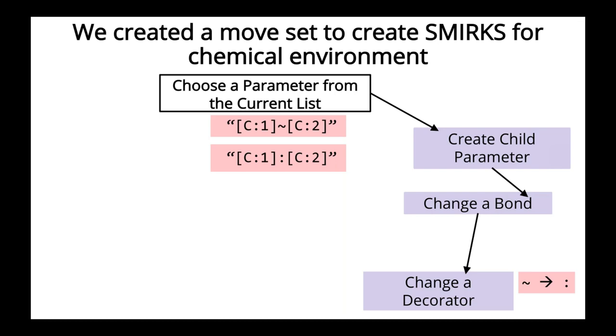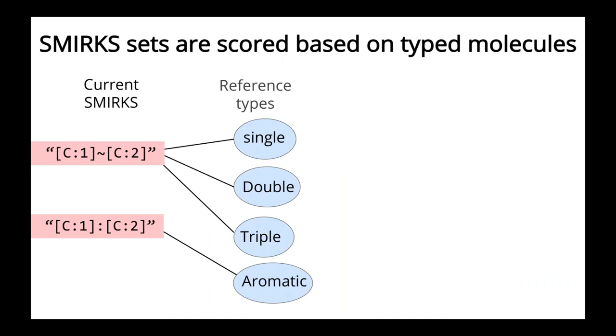So the next step is we need to evaluate if that change was a good change. So we're going to score that list of parameters based on a reference force field. So let's say in our reference force field, we had all four types of carbon-carbon bonds based on bond order. So you have single, double, triple, or aromatic. So what we do is we connect all of the matches. So if we assign from the current list and the reference list. So when we're assigning parameters, we do it in a hierarchical order. So the carbon-carbon any bond would match all of your carbon-carbon bonds. But then the aromatic bonds that comes below it would overwrite that. So then all of the aromatic bonds would be assigned to that parameter, that second parameter with the aromatic bond.